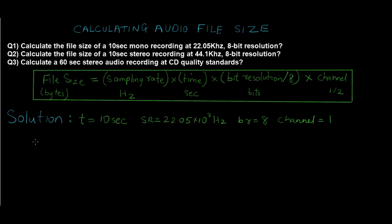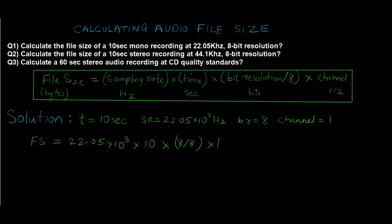Substituting into the formula: file size FS = 22.05 × 10³ × 10 × 8 ÷ 8 × 1. Remember not to forget the divide by 8. Also note that values can vary — they may give different kilohertz values, 24-bit instead of 8-bit, or time in minutes which you must convert to seconds. Performing the multiplication gives the final answer: 220,500 bytes.